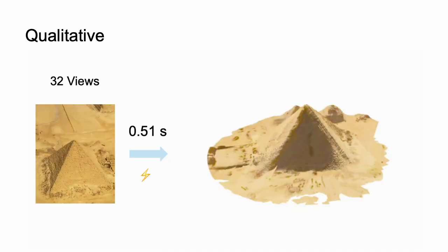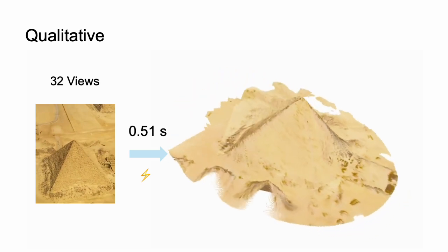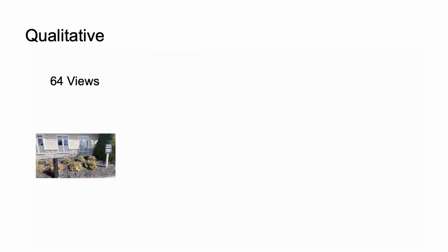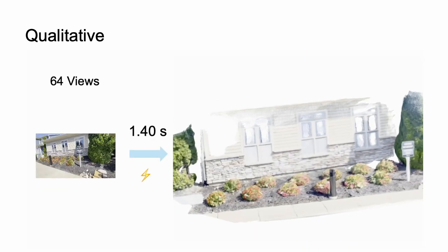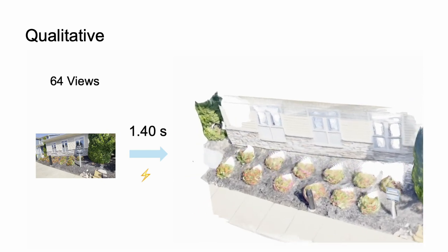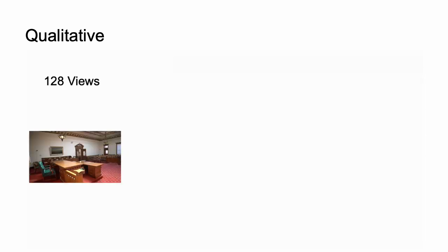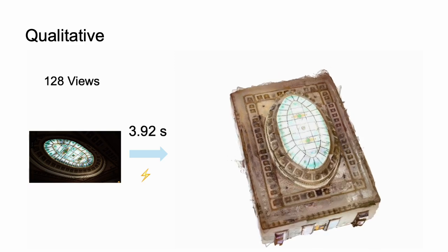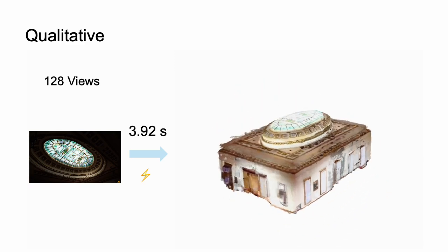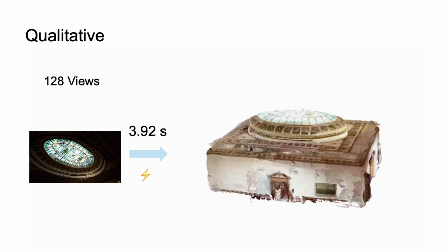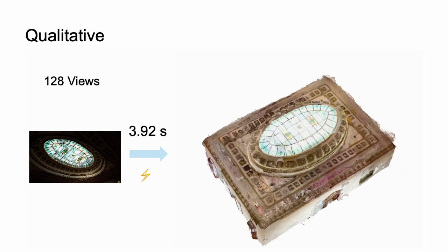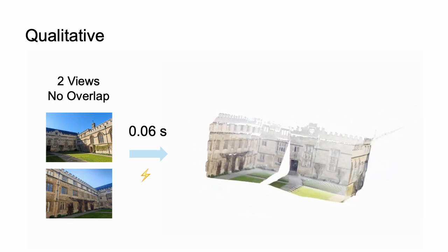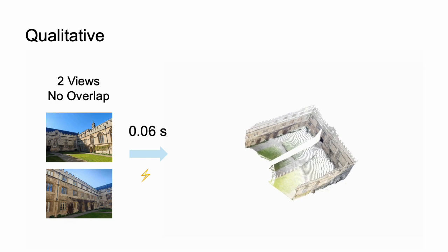Our model can handle out-of-domain test examples very well, including repeated structures such as scenes. During training, the model was only trained for at most 24 frames, but it can generalize to 64 frames, 128 frames, or more during testing. It can even handle non-overlapping two-frame input and provide a reasonable reconstruction.